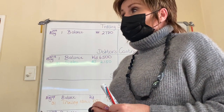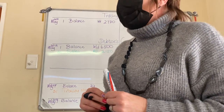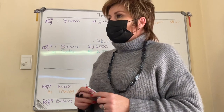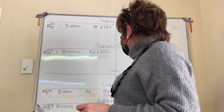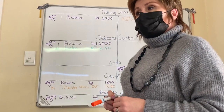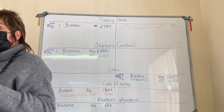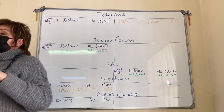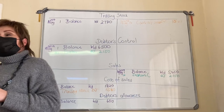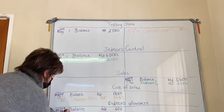Let's go to our debtors allowances journal. Your first column is debtors allowances — debtors allowances is an expense, so it goes to the debit side. Which other account are you going to use? Debtors control. Debtors control is decreasing — they owe us less money. Assets decrease on the credit side, so we go to debtors control on the credit side.